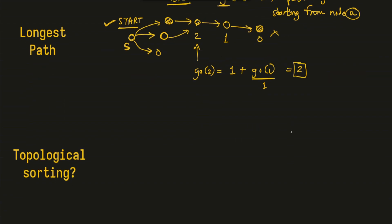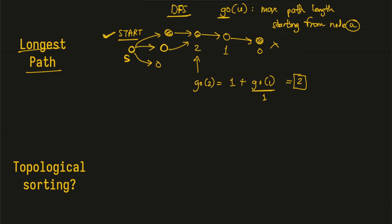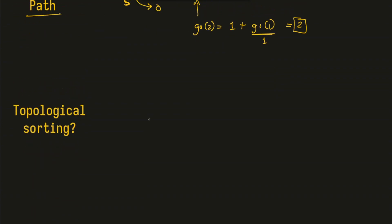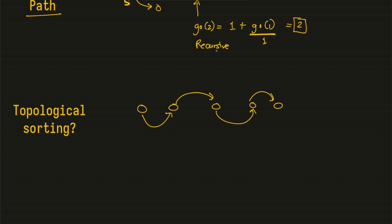This is the main idea for finding the longest path for each starting point, and we do this for all nodes from 1 to N. There is an alternate solution where we order the nodes so that edges always go from left to right. This topological sorting helps us determine the order in which to compute values — iteratively instead of recursively.